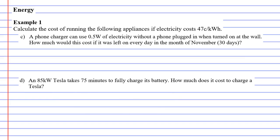Let's now move on to questions C and D on this next slide. So once again, our price of electricity is $0.47 per kilowatt hour. And in question C, we have a phone charger that uses only 0.5 watts of electricity. So less than 1 watt. And it says, without a phone plugged in and turned on at the wall.